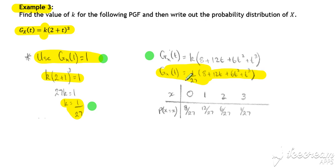With it expanded out and k substituted in, we can then write down our possible values that x can take. Those are the powers of the dummy variable t, and the probabilities are our coefficients.